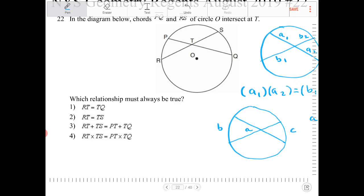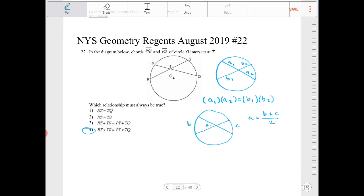RT times TS is equal to PT times TQ. That is absolutely true. That's option four. And that is this theorem that I just talked about in the beginning of the video. Thank you.